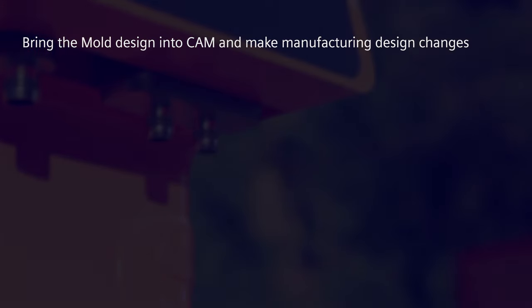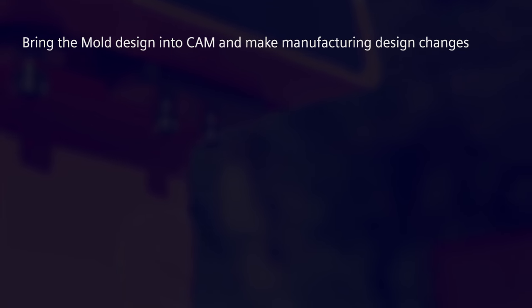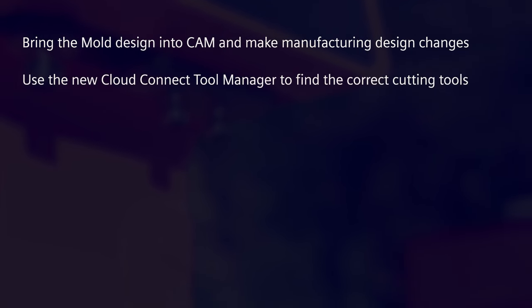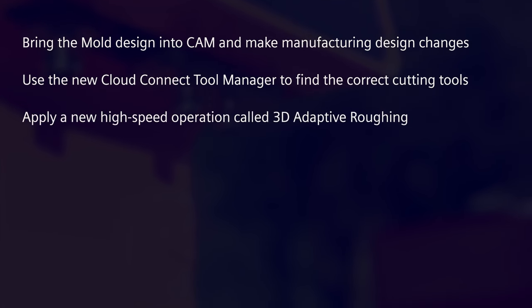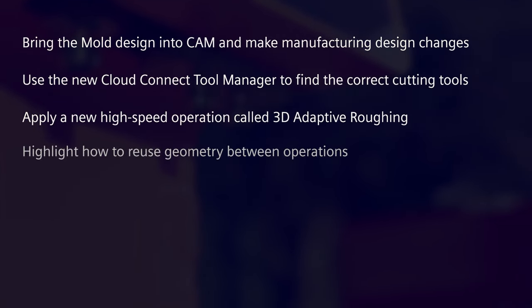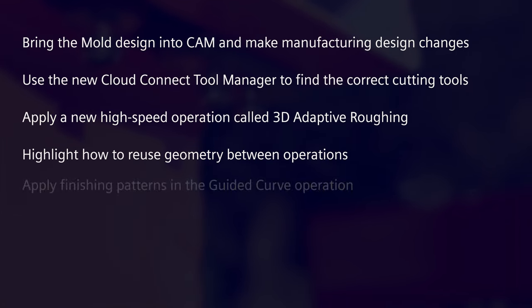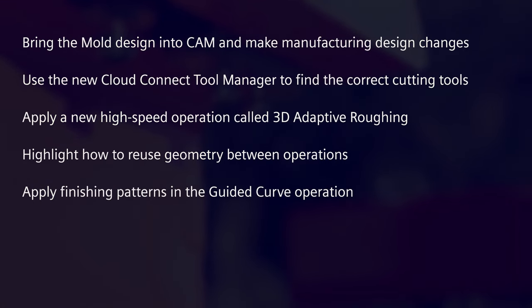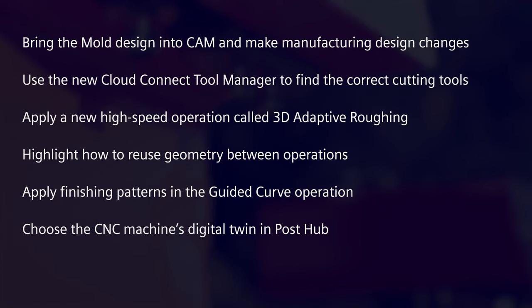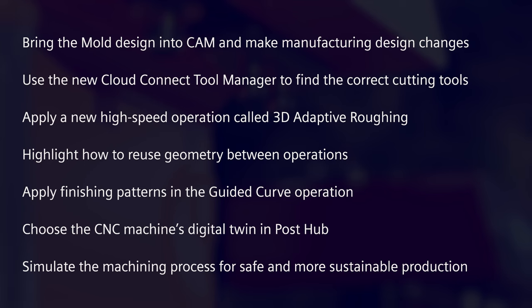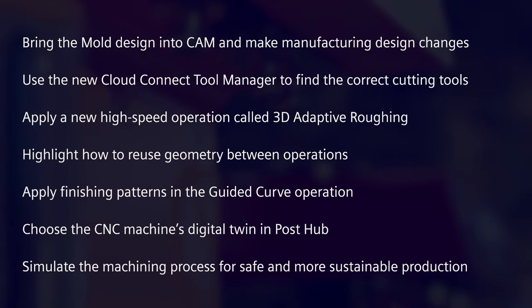We're going to explore the tooling manufacturing capabilities in NX CAM and what it takes to machine the mould for the plastic cover of our coffee machine. We'll use new and existing functionality in NX CAM to define the machining process for the mould. This includes bringing the mould design into CAM and making manufacturing design changes, using the new Cloud Connect tool manager to find the correct cutting tools, applying a new high-speed operation called 3D adaptive roughing, highlighting how to reuse geometry between operations, applying finishing patterns in the guided curve operation, and choosing the CNC machine's digital twin in PostHub to simulate the machining process for safe and more sustainable production.